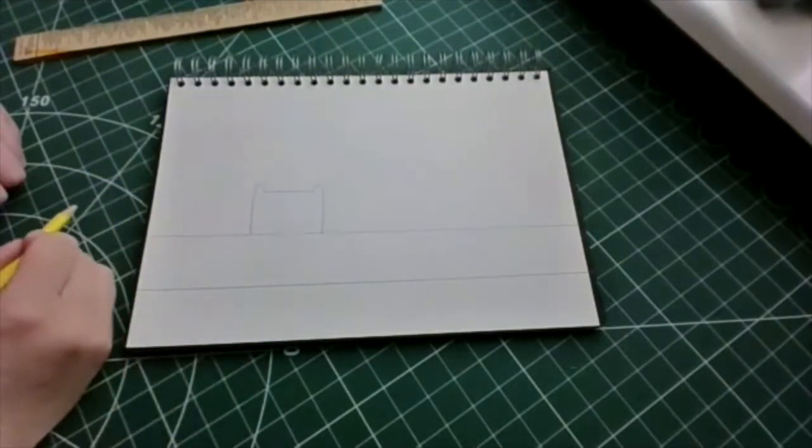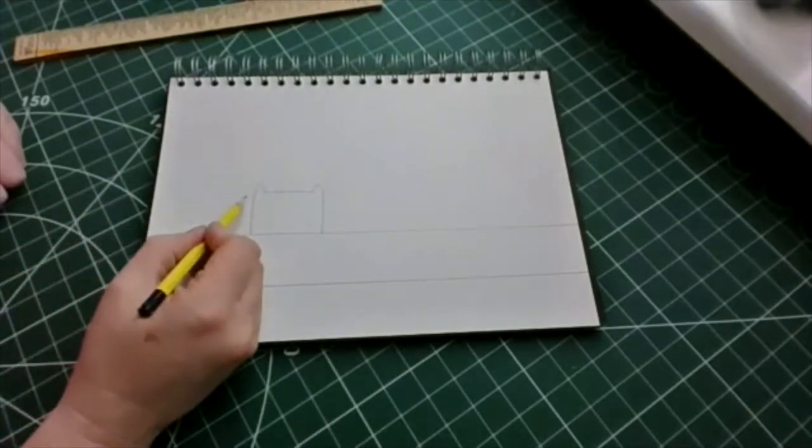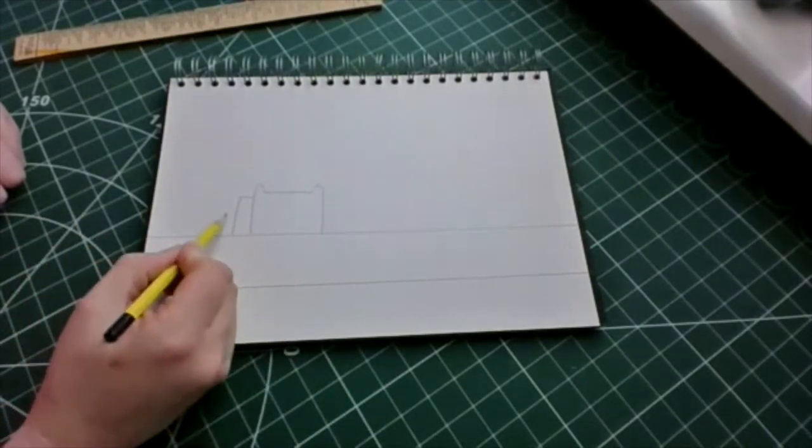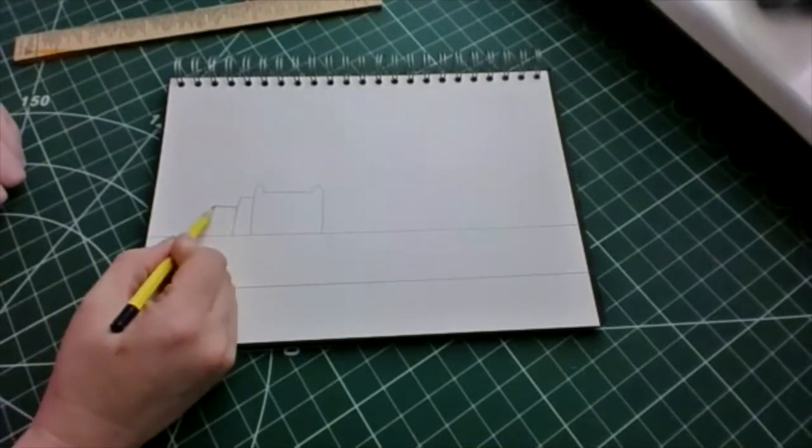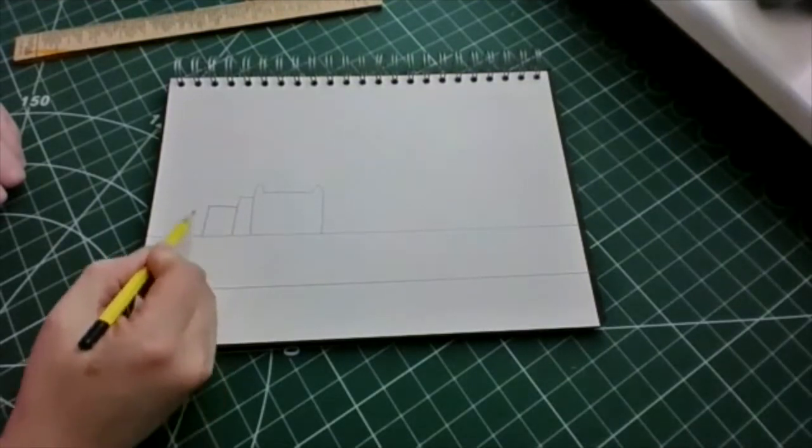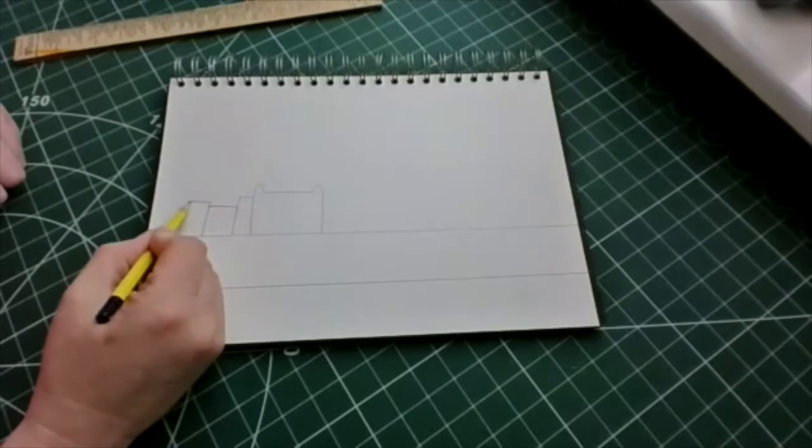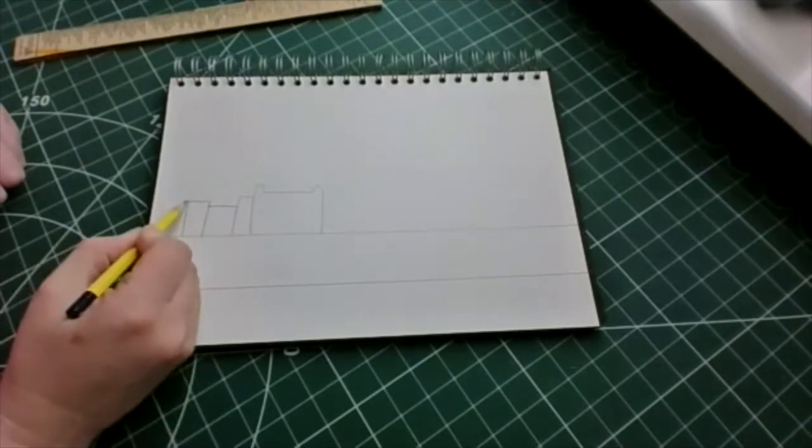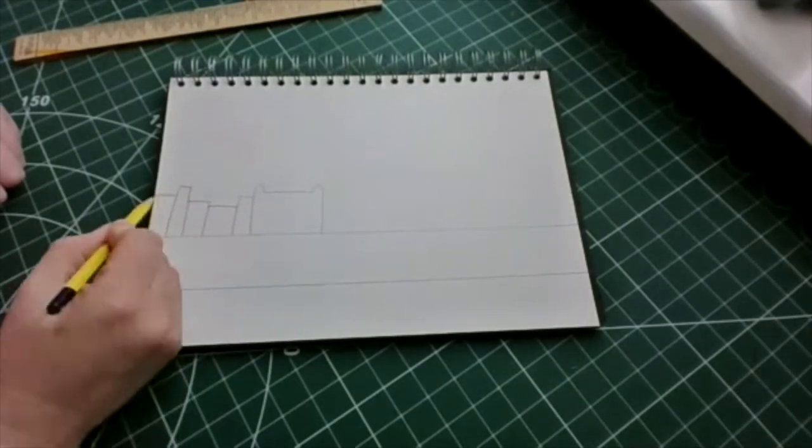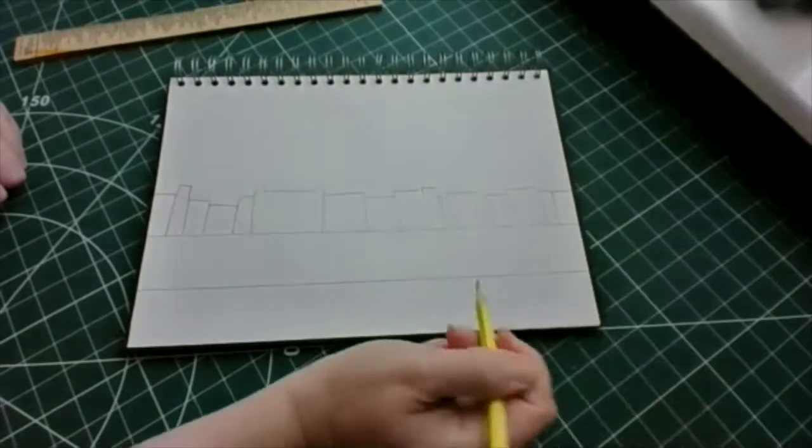Now the houses that we're going to put in all the way along, they were all different sizes. Some were thin and tall, some were fat and small. They were all different all the way along. There we go.